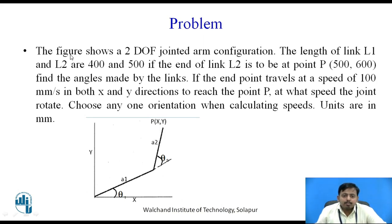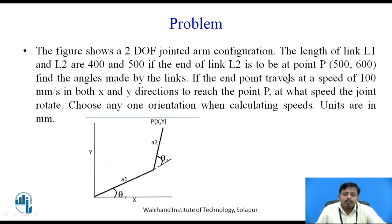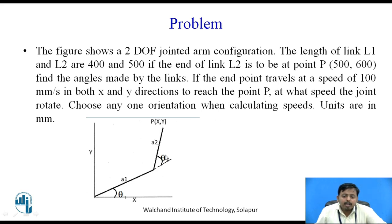We will now solve a problem. Link lengths are L1 = 400 mm and L2 = 500 mm. The end effector position is x = 500 mm and y = 600 mm. We must find angles theta-1 and theta-2. The end effector travels at a speed of x-dot = 100 mm/s and y-dot = 100 mm/s, and we must find the angular speeds theta-1-dot and theta-2-dot.